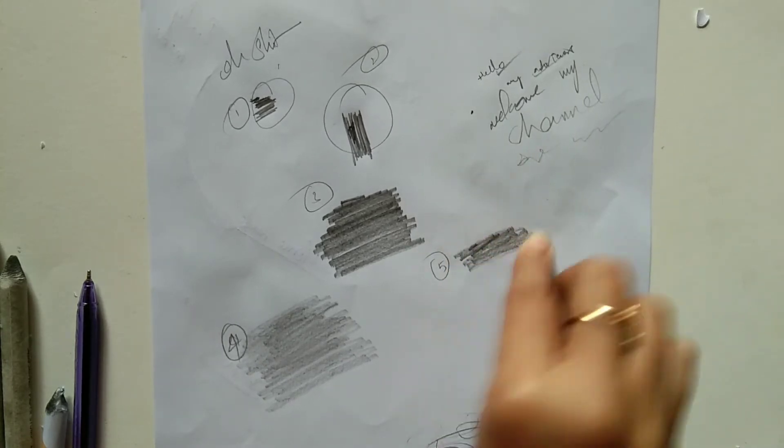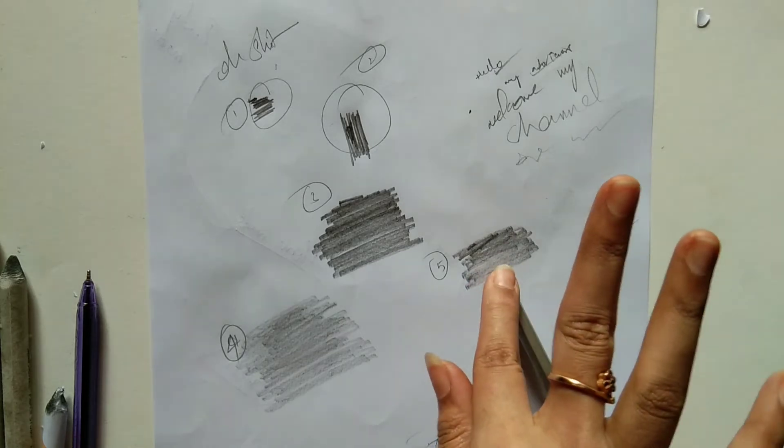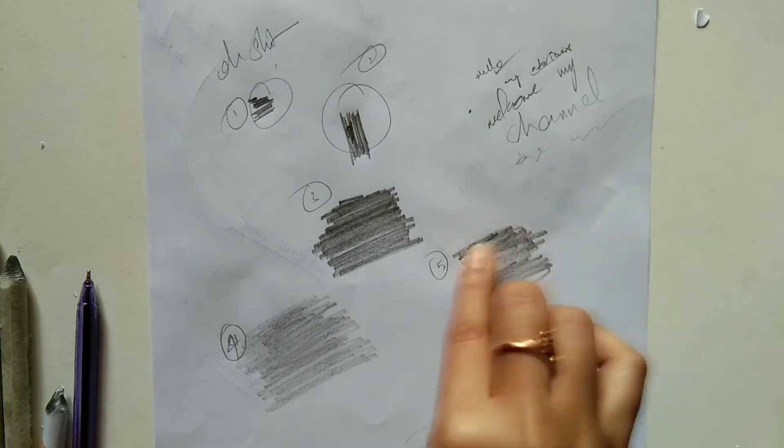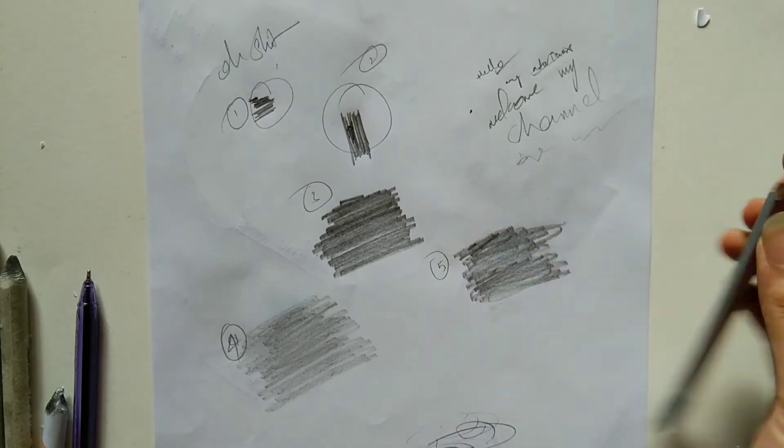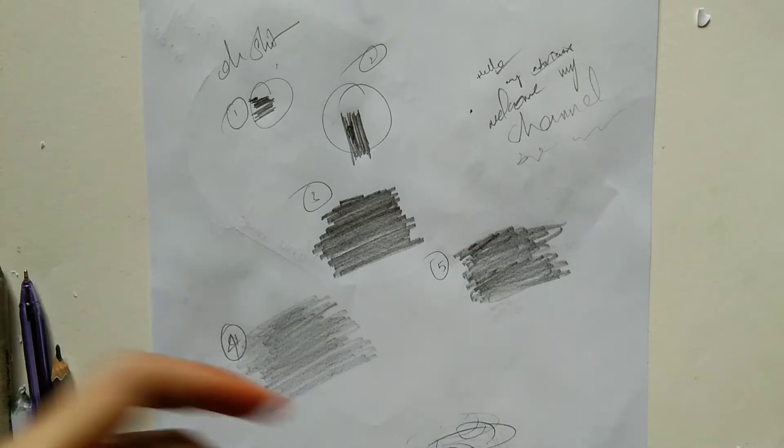Our fifth technique is an interesting one: holding lead, not holding pencil. Only lead. In third technique we hold lead as well as pencil, but here in fifth one we are holding only lead by pressing against the paper. These are the five techniques we are comparing today.